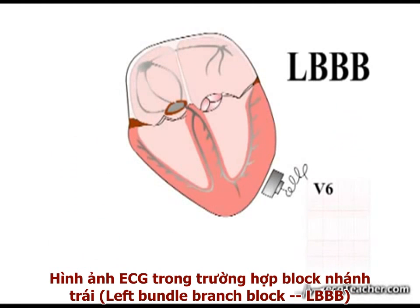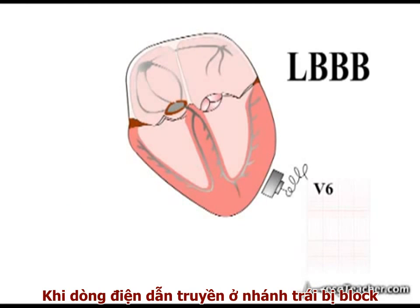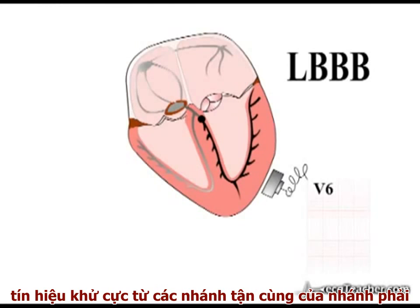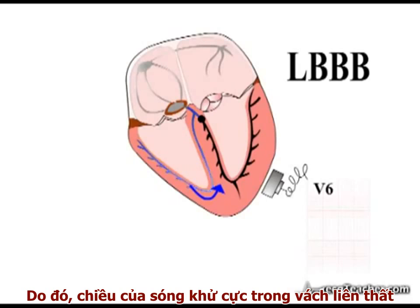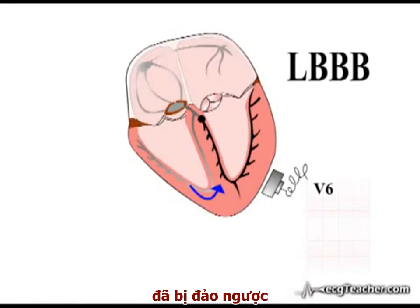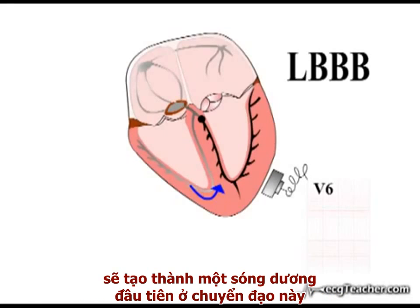The ECG findings in left bundle branch block are also predictable. When flow in the left bundle branch is blocked, the depolarising signal released from the terminal branches of the right bundle branch moves into the septum. The direction of travel of the depolarisation wave within the interventricular septum has therefore been reversed, now moving from right to left — the opposite direction to normal. This early signal is moving towards V6, resulting in an initial positive deflection in this lead.